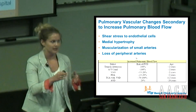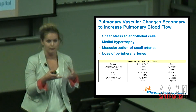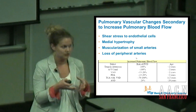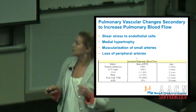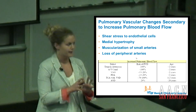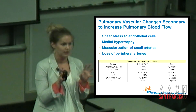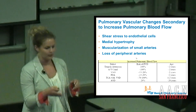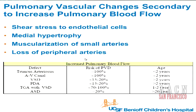The pulmonary vascular changes secondary to increased pulmonary blood flow begin with shear stress to the endothelial cells in the pulmonary arteries. As a reaction there's medial hypertrophy — the arteries build muscle and decrease their lumen size, raising pressure further. There's muscularization of the small arteries, and then a loss of peripheral arteries. The pulmonary arterial system is like a tree and you get pruning — first the branches disappear, then smaller vessels. On a pulmonary angiogram in a PH patient this can be really dramatic.